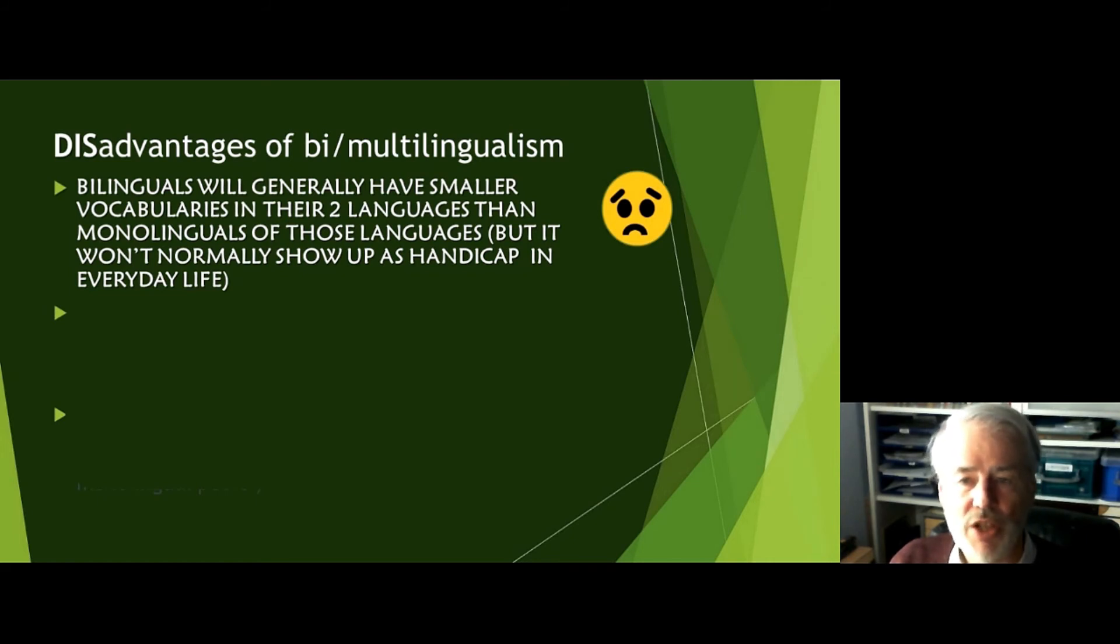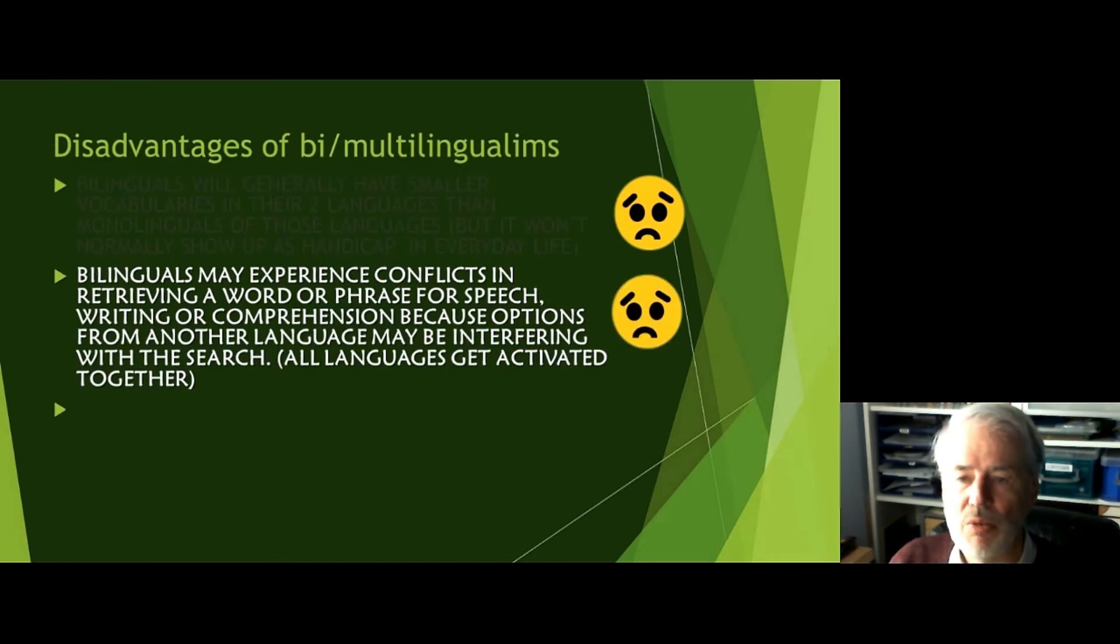Let's just look at the situation as it is. Are there any disadvantages? Well, yes, they certainly are. Bilinguals, for example, will generally have smaller vocabularies in their two languages. That's natural, because they have to divide up their time being exposed to one language and being exposed to the other one. So, naturally, smaller vocabularies are developed. Not that you would really see it in proficient bilinguals in everyday life. It doesn't appear to be a handicap, but when you're acquiring it maybe you will notice it. Bilinguals also experience conflicts in retrieving words or phrases for speech, writing, and comprehension, because options from one language will always be interfering with the search. Remember, all languages get activated together. So it's not surprising that if you're searching for a word, or your mind is searching for a word quickly, it may get competition from that word, the way you express it in another language.